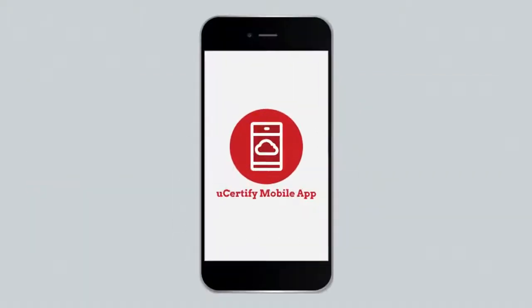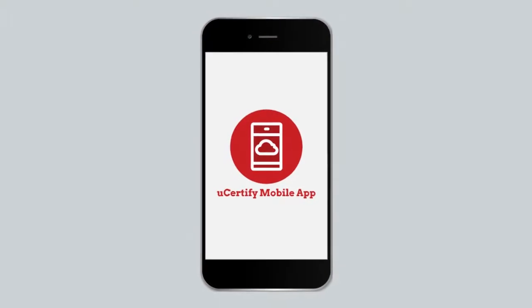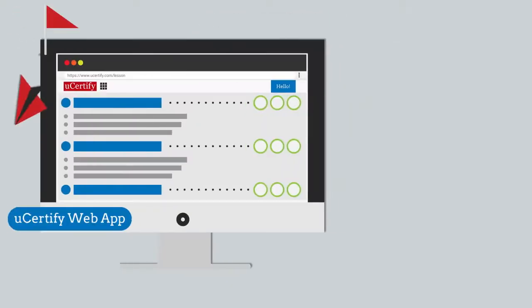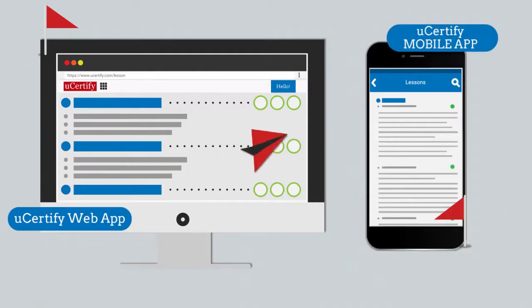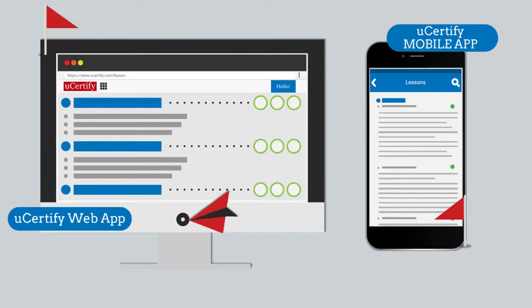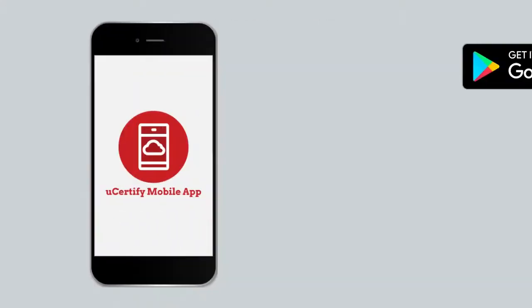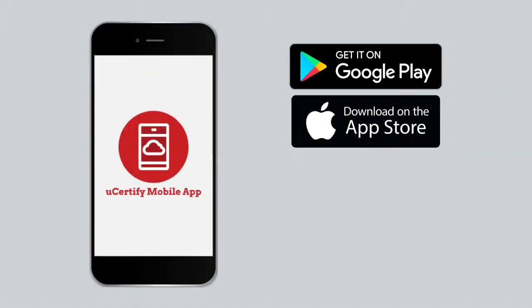Our course is also available on the UCertify mobile app. You can start the course with a web app and end with a mobile app, or vice versa. Students and educators can move from device to browser and get back seamlessly without losing any performance or activity data. You can download our mobile app from the Google Play Store and iOS App Store.